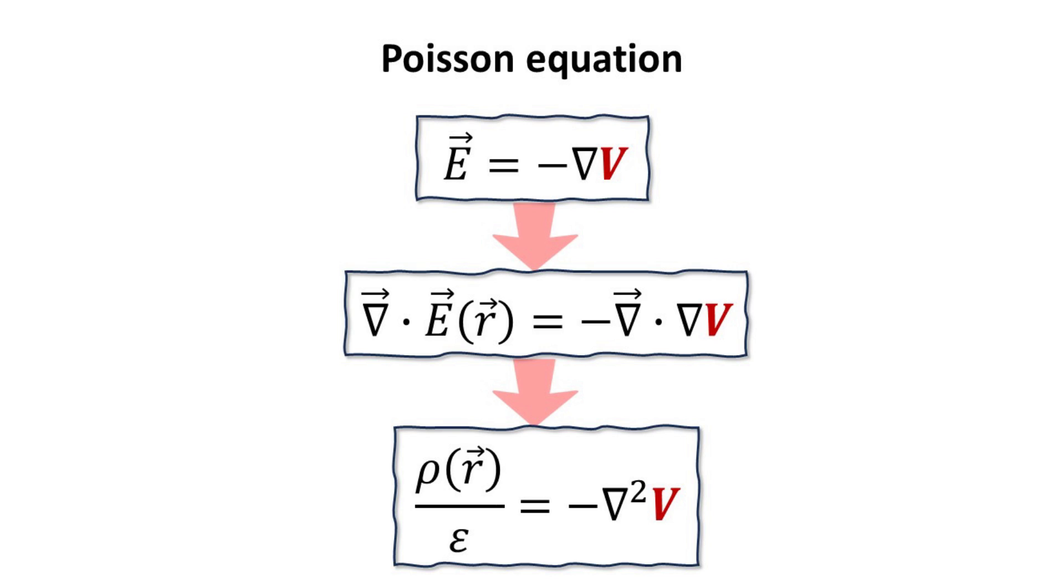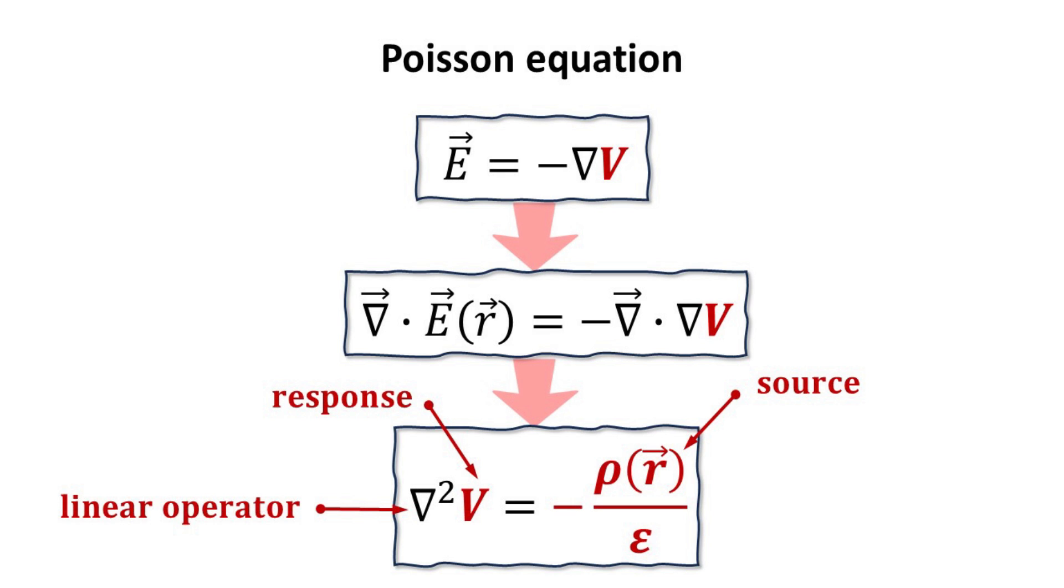The right-hand side can be written compactly as the Laplacian of V, a well-known identity in vector calculus. This last equation is also known as the Poisson equation. Recalling what we just learned in the previous chapter, the Laplacian will be our linear differential operator, the charge density our source function, and the electric potential is our response function.